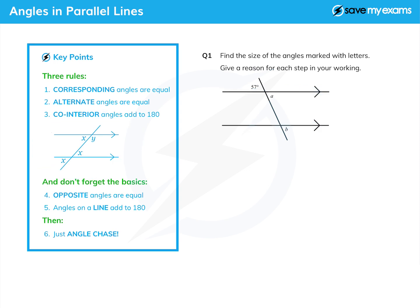There are three sorts of angles you need to be aware of and you need to know their names. When you have angles like these two x's here, which used to be called F angles, but we call them corresponding angles now. Corresponding angles are equal - you need to be able to quote that.